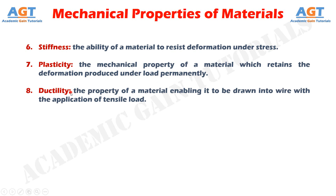Ductility. Ductility is termed as the property of a material enabling it to be drawn into wire with the application of tensile load. A ductile material must be strong and plastic. Ductility is usually measured by the terms percentage elongation and percent reduction in area, which are often used as empirical measures of ductility. Materials that possess more than 5% elongation are called ductile materials. The ductile materials commonly used in engineering practice in order of diminishing ductility are mild steel, copper, aluminium, nickel, zinc, tin and lead.